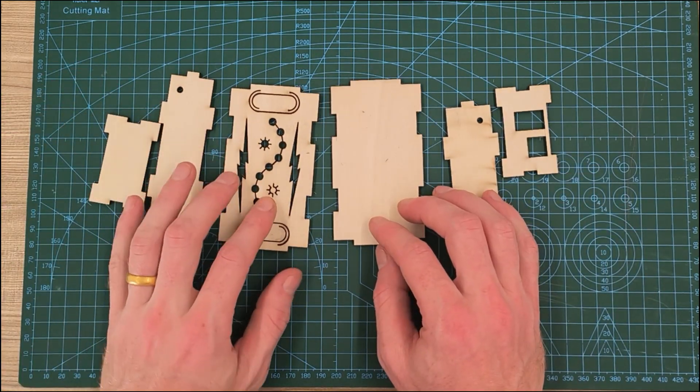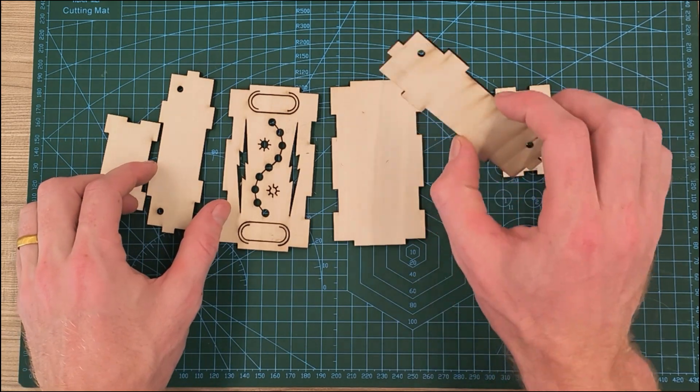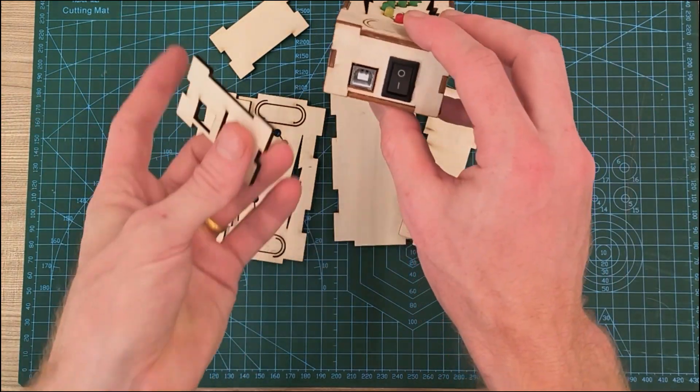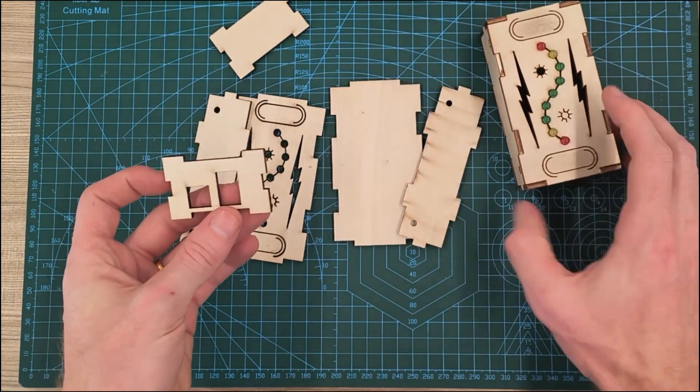And then to assemble it, this is the top, this is the bottom, the two sides, and then you also have the switch right here. So this is the example.